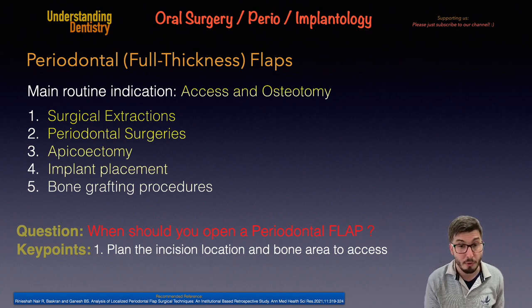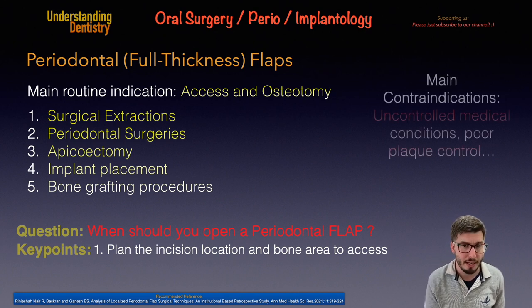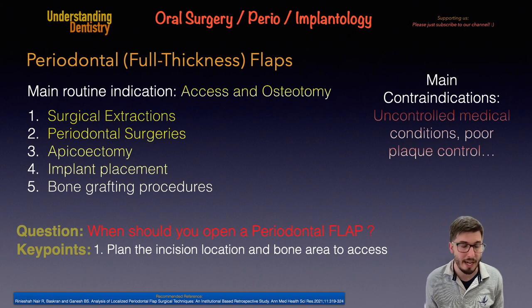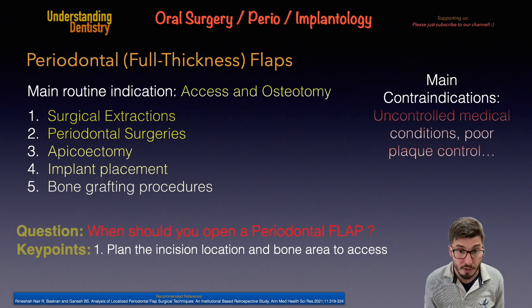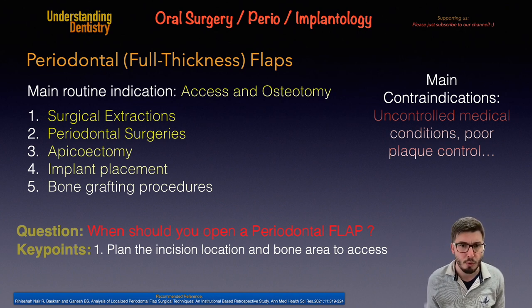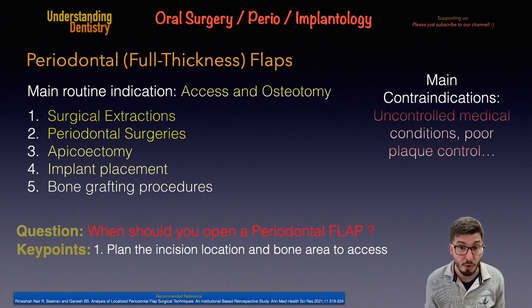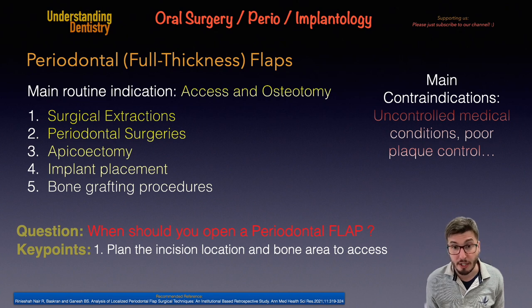There are also some contraindications, which are essentially the contraindications of any surgical procedure — basically uncontrolled medical conditions. A controlled hypertension or controlled diabetes is not usually a contraindication for surgery. However, poor plaque control or very poor oral hygiene could be a risk for the surgical outcome, depending on the situation.